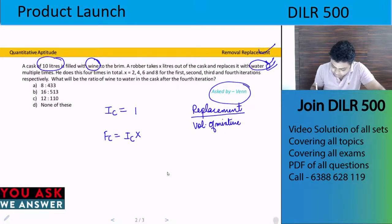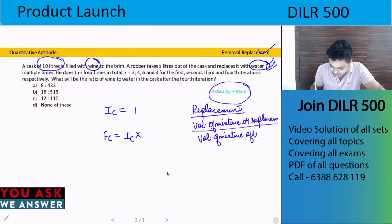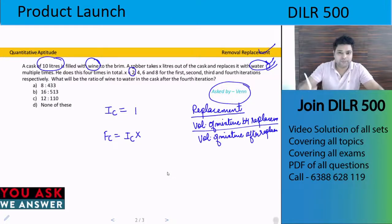...after removal before replacement divided by volume of mixture after replacement. Now I will go a little slow. When x equals 2, there are two steps: one removal and one replacement. When we remove it, the volume was 10 liters. After removal, 8 liters is the volume. Then when we replace it, we have the multiplying factor.